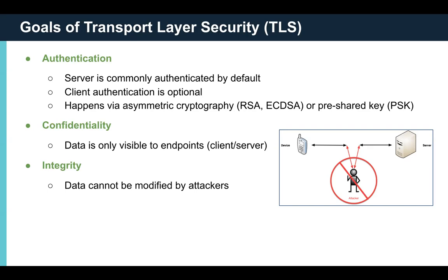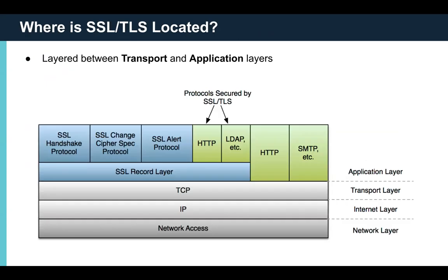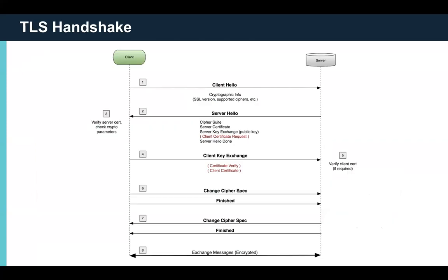Where does SSL and TLS sit? This is a simplified version of the OSI model — SSL itself sits between the transport and application layers. You can see the SSL sub-protocols in blue sitting on top of TCP/IP, and some example application layer protocols listed in green. When a client first connects to a server, it goes through the TLS handshake process — there are several round trips that happen, and you finally end up with a secure communication channel. During this process, certificates are exchanged, authentication is done for the client and/or server, and common keying material is set up for that secure connection.